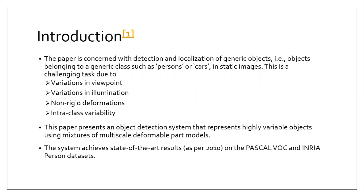Object detection has been one of the major challenges in computer vision. This paper considers the problem of detection and localization of generic objects — that is, objects belonging to a generic class such as persons or cars in static images. There are quite a few challenges arising due to image variations like variations in viewpoint, variation in illumination, and non-rigid deformation arising due to different poses taken by a person in an image. Also, inter-class variability arising due to shapes and color of the same object. This paper presents an object detection system that represents highly variable objects using mixtures of multi-scale deformable part models, and claims state-of-the-art results on the Pascal VOC and INRIA datasets.